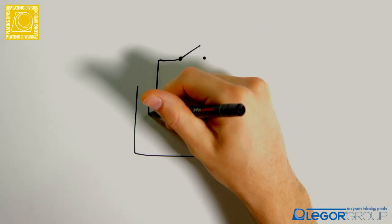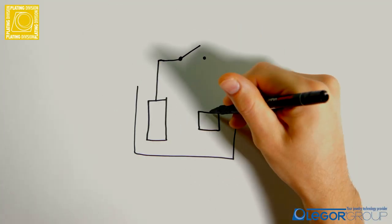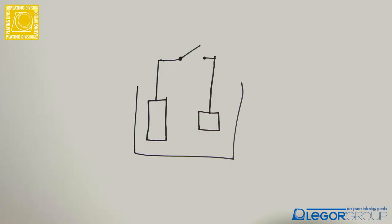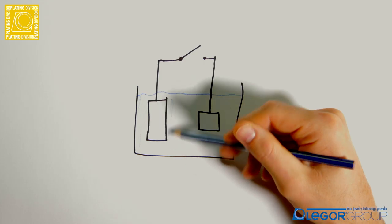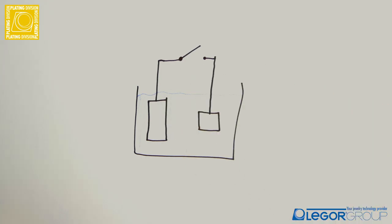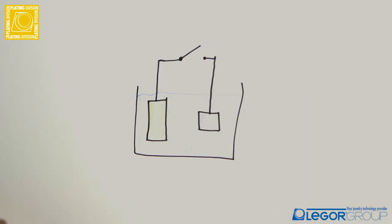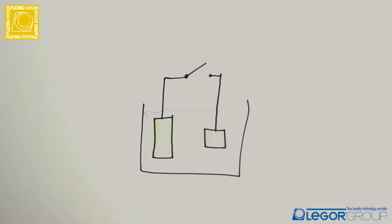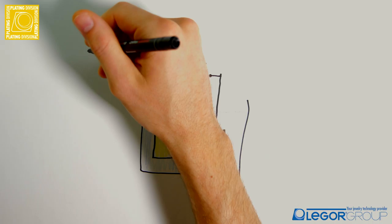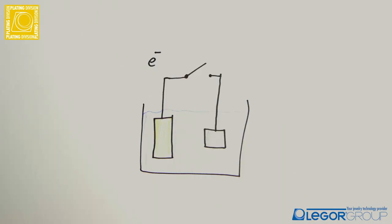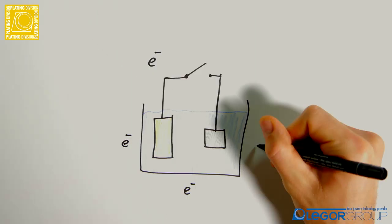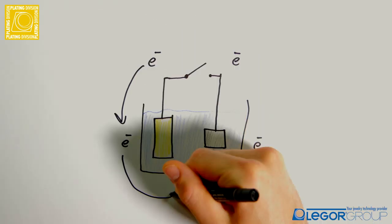An anode is a strip of high purity metal that brings current from the positive lead of the power supply to the plating bath. Its primary purpose in electroplating is to close the electrical circuit, allowing the plating solution to perform.